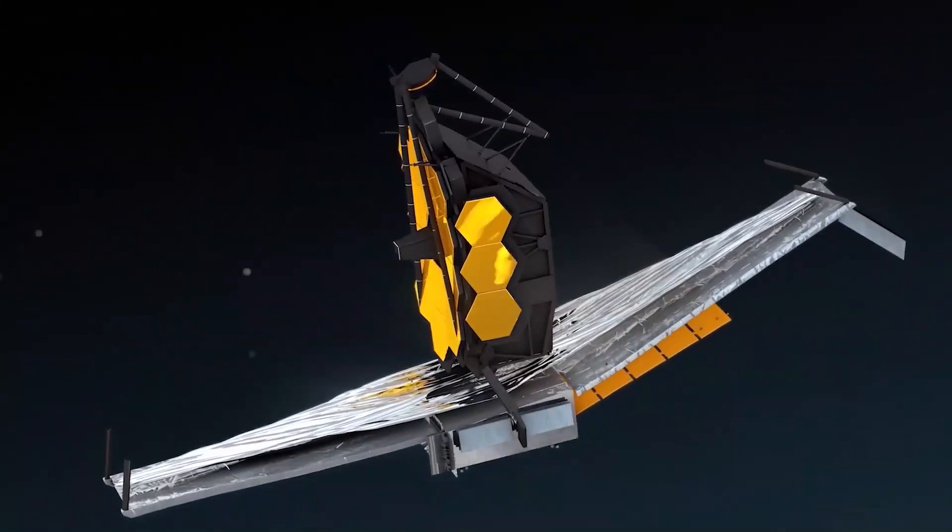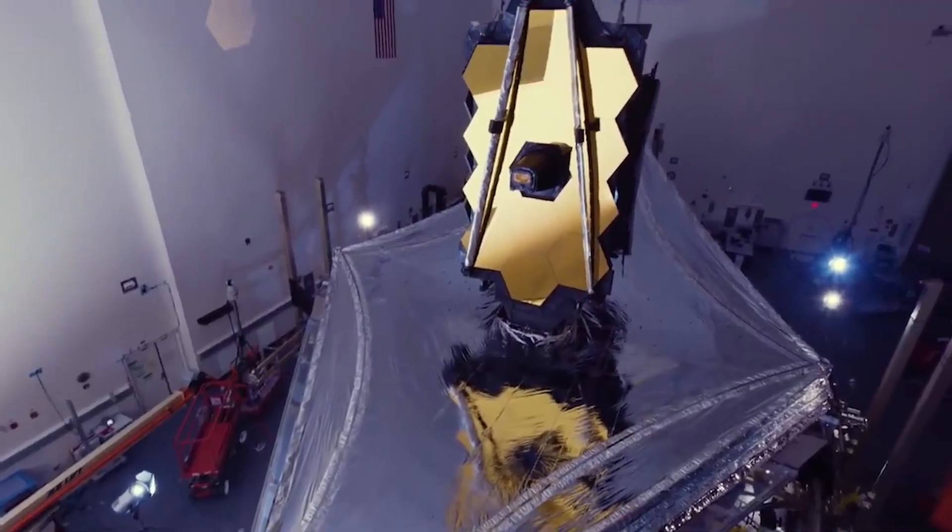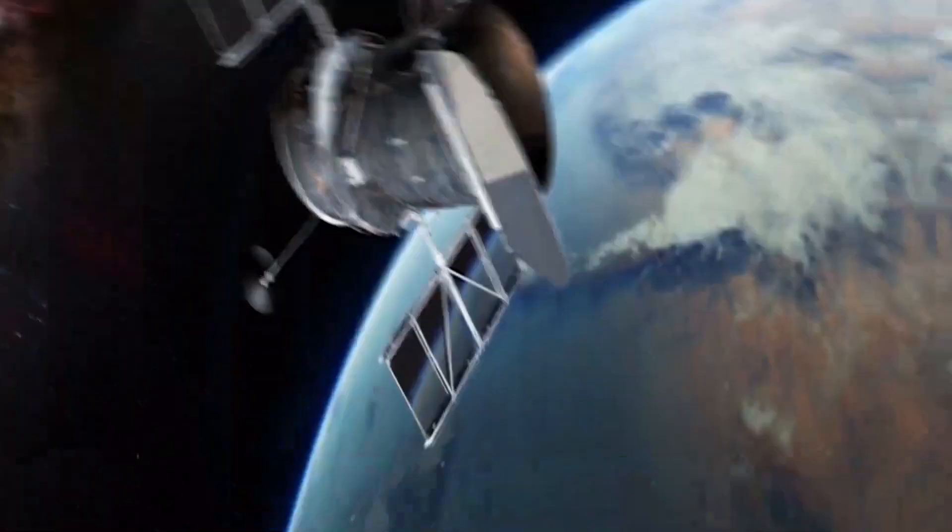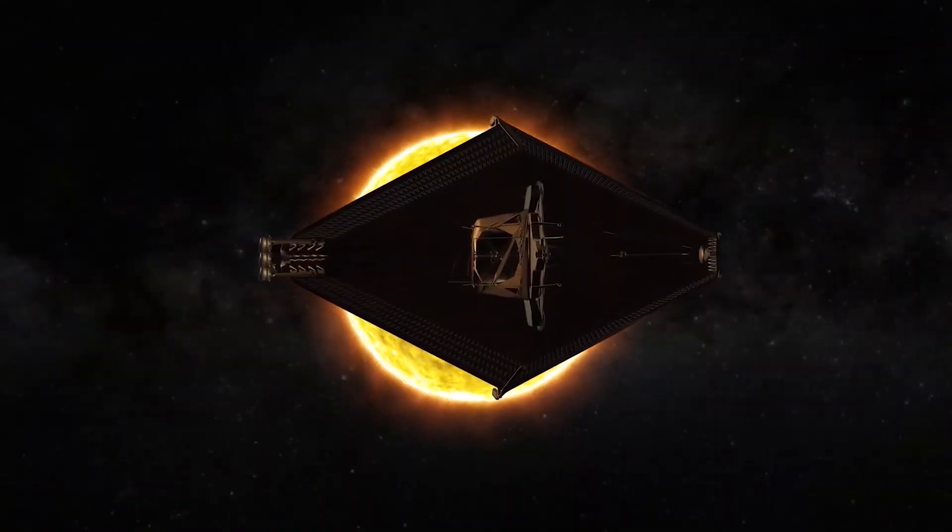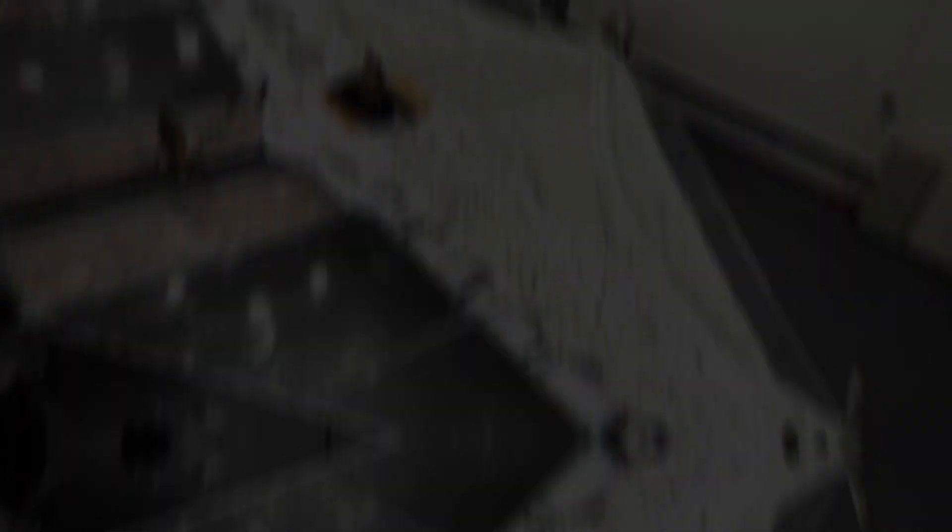The JWST is easily the most advanced telescope ever built by NASA since the organization began to produce telescopes. This telescope was recently launched to replace the previous, and now obsolete, Hubble Space Telescope. Since it was launched, we are beginning to see what stuff this telescope is made of.